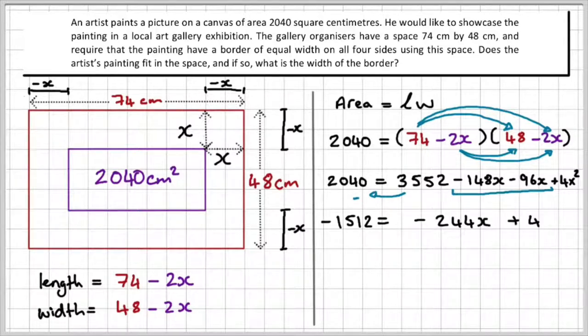So if we just clean this up then, that becomes 1512, which equals to, if you add those two together, collect like terms, you get minus 244X, and that leaves us with 4X squared. Now if I can write this as AX squared plus BX plus C, I'll get 4X squared minus 244X plus 1512 equals 0.